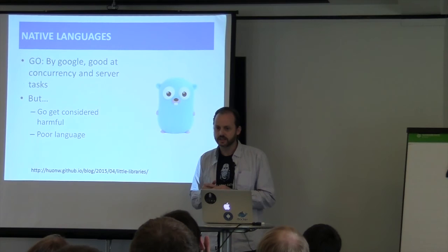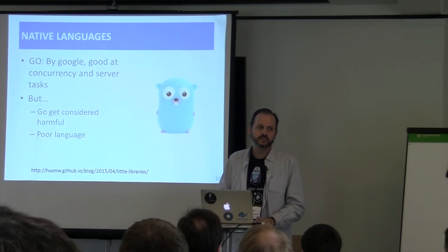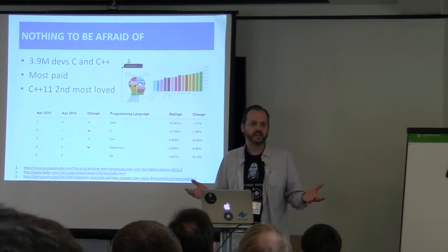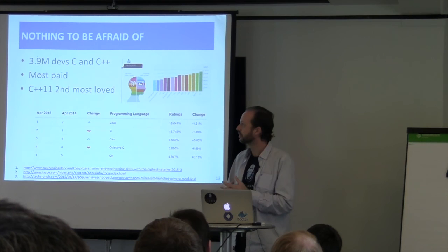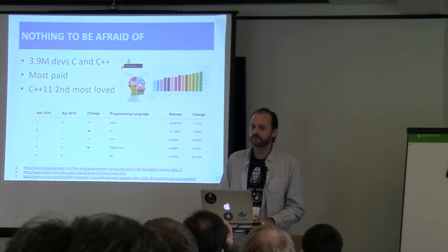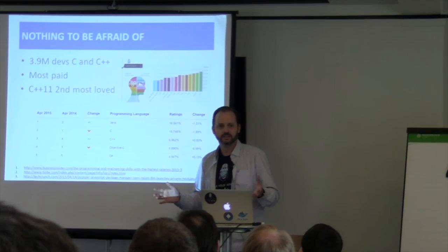It seems we shouldn't be afraid of anything. We are almost 4 million developers together — C and C++. C++ developers are the most paid, which is great. Stack Overflow ranks C++11 as the second most loved technology, so everything is good for C++. I would say C++ is a solid building — a skyscraper that's going to be there. But this is actually what could happen to that skyscraper. Can you guess who that is? Yeah, it's Rust.